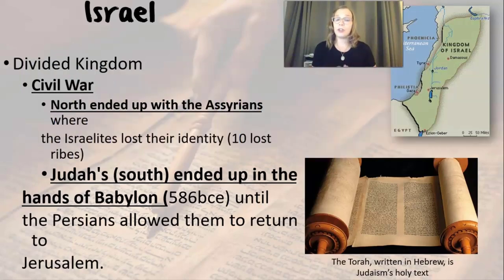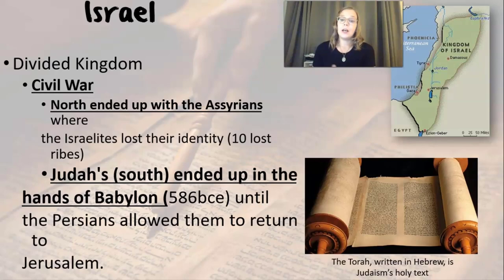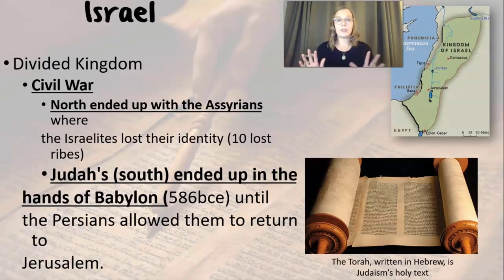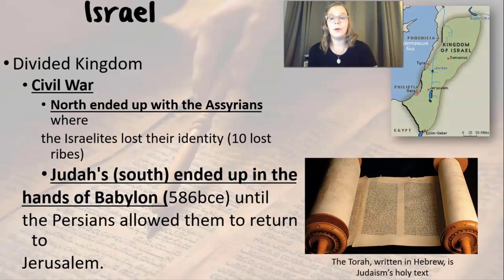There is a sort of cycle of Jewish persecution throughout history that we'll come back to later. Eventually the Persians are going to come in and will give the southern tribes in Babylon a chance to return to Jerusalem. So the Israelites' history is very much like going back home, then being exiled, then trying to get back home and being exiled again — they're spread out and not united like they were in the beginning.